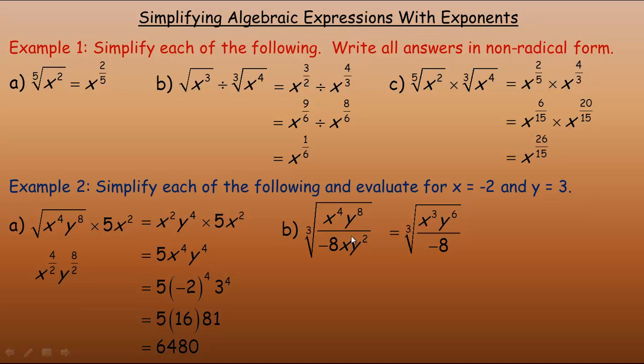Remember, you subtract the exponents. There's actually a 1 here on the x. So 4 minus 1 would be 3. And y to the 8th divided by y squared, you subtract the exponents. So 8 minus 2 would be 6 over here. So that's how we can simplify what's underneath the cube root.